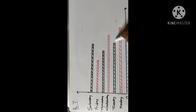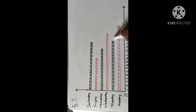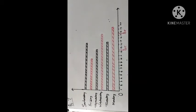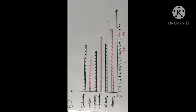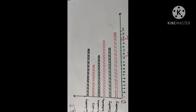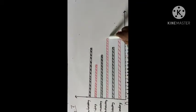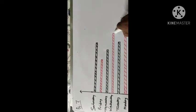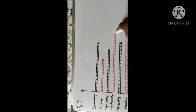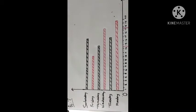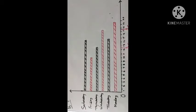Similarly, we see that on Wednesday, 35 bags were sold, so the length of the rectangle will be 17.5 units. We draw a rectangle of length 17.5 units. On Thursday, 25 bags were sold, so the length of the rectangle will be 12.5 units. We draw a rectangle of length 12.5 units.